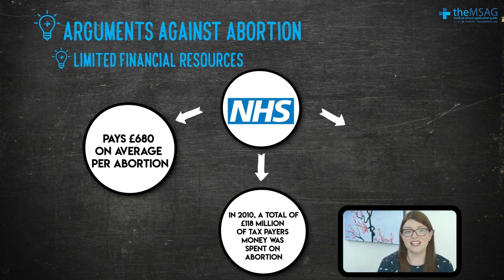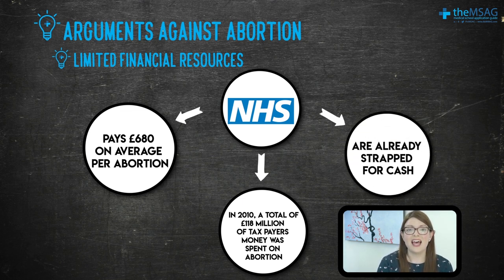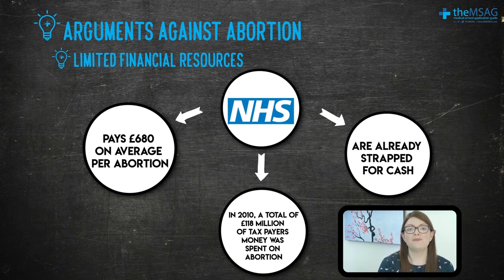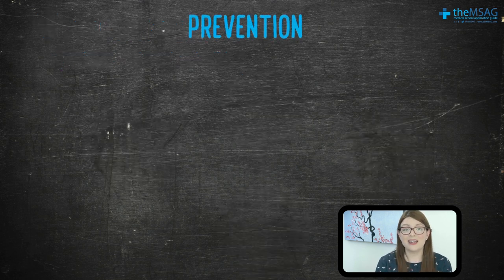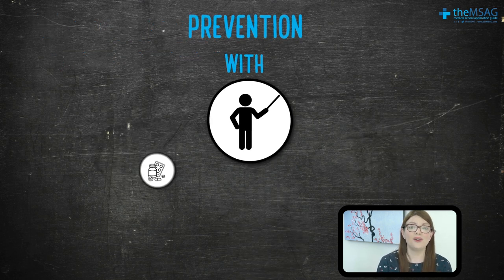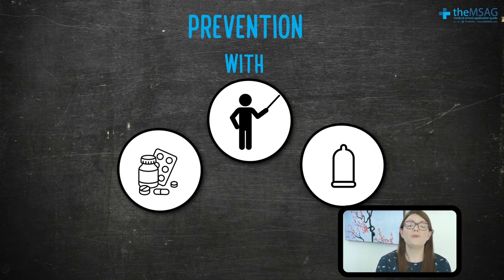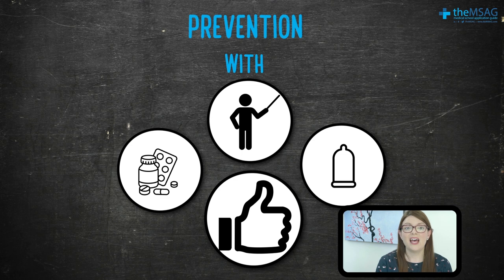Consider that the NHS is already strapped for cash. I think that the money could be better spent elsewhere — in our busy A&E departments, for example, saving lives. Preventing pregnancies in the first place with education and contraception would be much cheaper and would reduce the need for abortion.